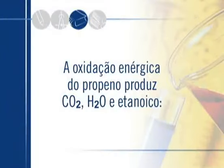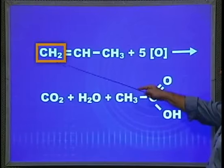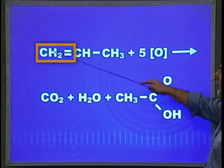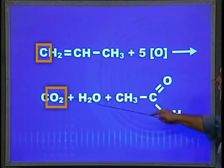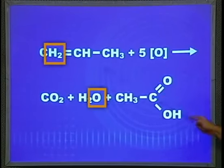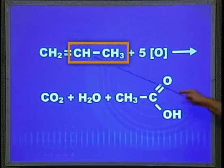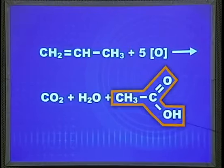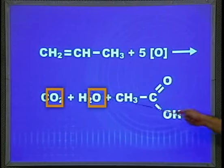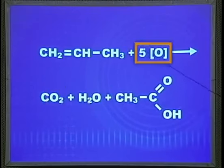A oxidação enérgica do propeno produz CO2, água e etanoico. Aqui tenho um carbono primário CH2 — quando a dupla está na pontinha, a pontinha queima, dá CO2 e água. Um carbono gastou dois oxigênios; os dois hidrogênios já gastaram um oxigênio. Do outro lado, cadeia de dois carbonos secundário, vai ter formação de ácido: CH3-COOH. Entraram dois oxigênios mais os três anteriores, totalizando cinco oxigênios que têm que vir do agente oxidante.